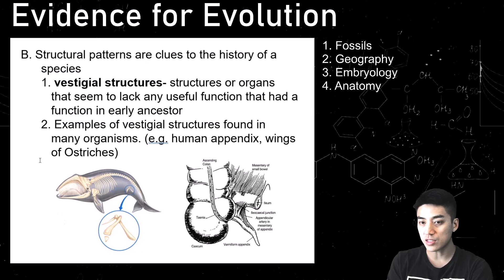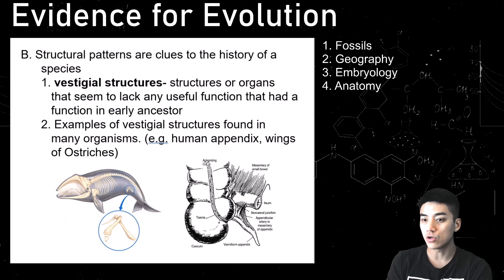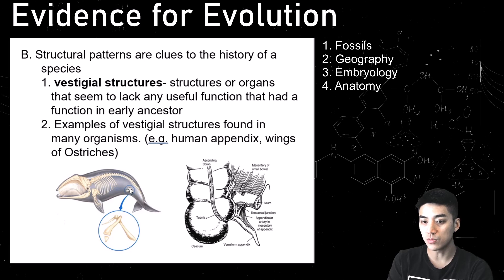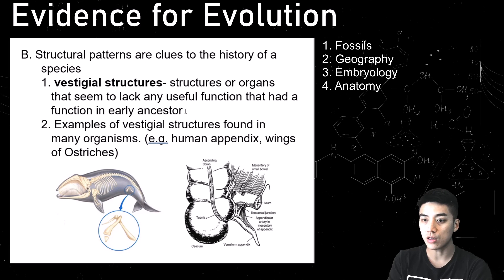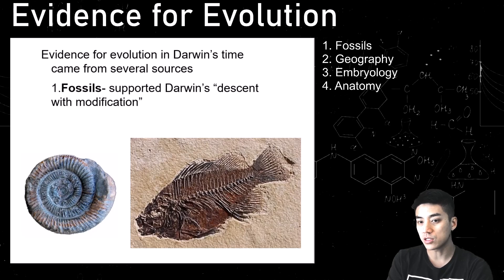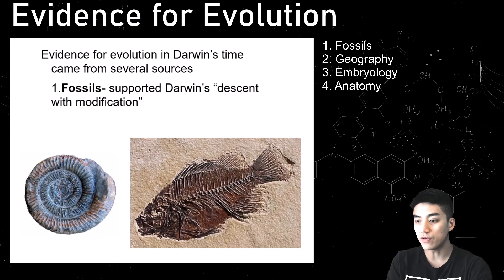The last piece is vestigial structures — structures or organs that don't have any modern-day function. For a human being, that would be the appendix, which is thought to have been used to digest vegetables or diets high in cellulose. A whale also has a little bone that no longer has a function. This might suggest we have some sort of early ancestor, and it's all supported by fossil evidence as well.